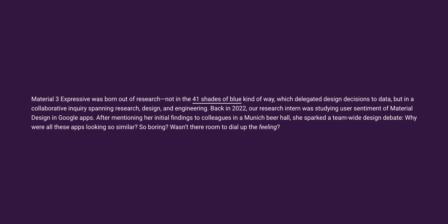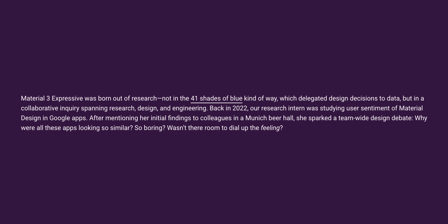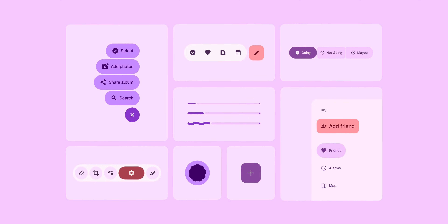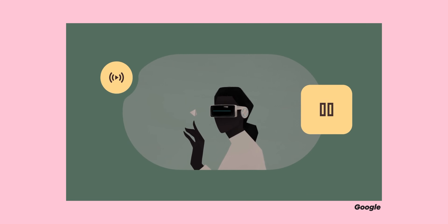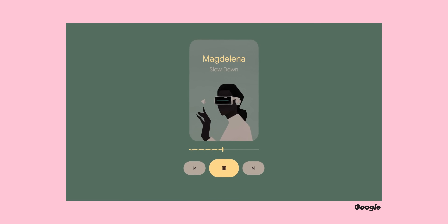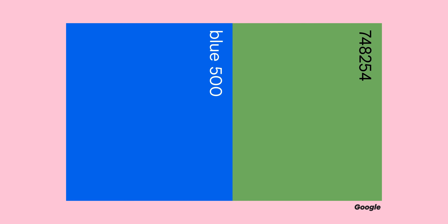Google wants apps to be less clean and boring and more emotional — they want interfaces that connect with people on a deeper level. It's a bit of a vague concept, but it's a clear indication that they want to move away from the somewhat sterile designs that have become prevalent in recent years, even built upon Material You principles. You might also hear it called M3 Expressive or just Expressive Design.